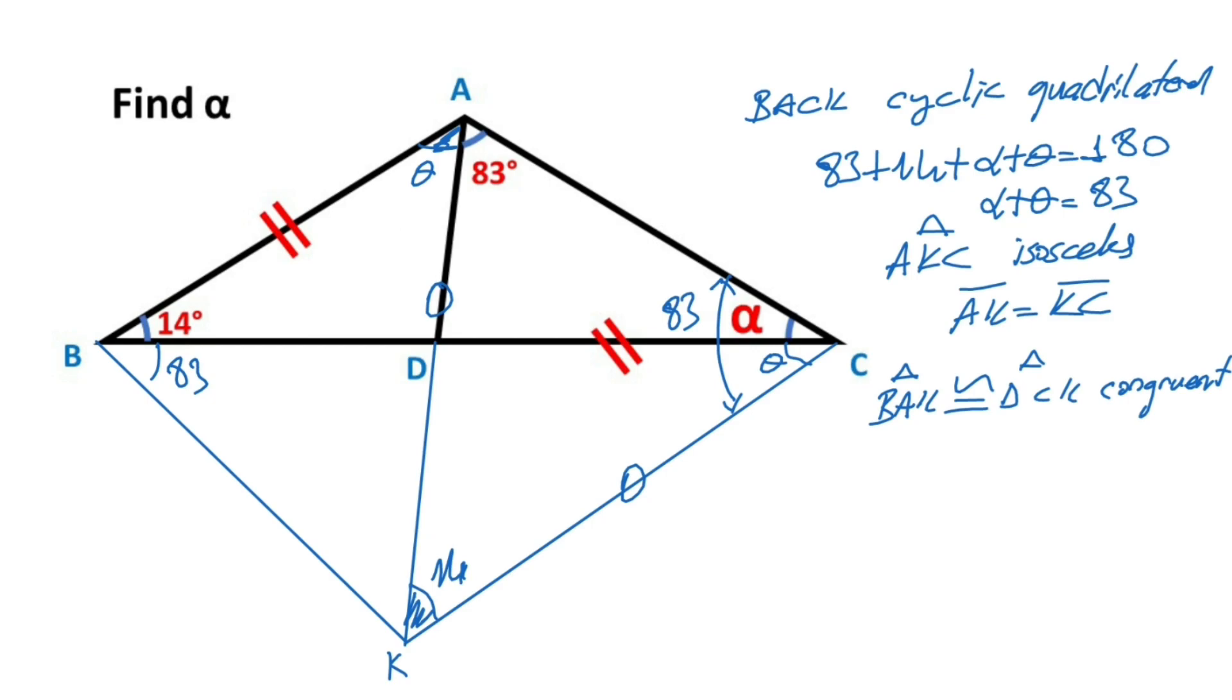Therefore, we know that congruent triangles have same sides and angles. If it is at this length opposite of the theta, opposite of the theta must be equal same length. As a result, we get an isosceles triangle. Therefore, BKD triangle is an isosceles triangle, so BK must be equal KD.